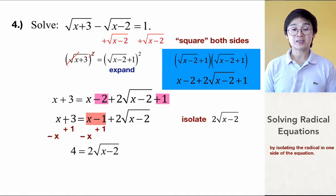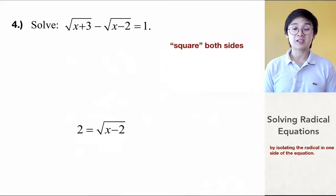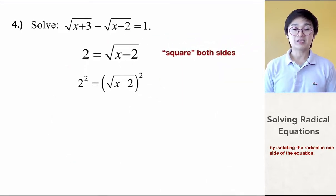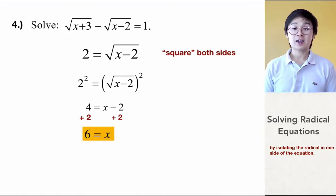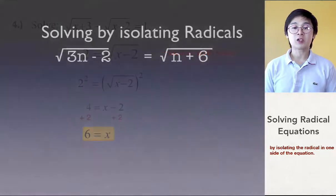By solving for x, the steps are now simpler. We have 4 equal to 2 times square root of x minus 2. By dividing both sides by 2, we get 2 equal to square root of x minus 2. Since our equation still has the square root symbol, we square both sides to get rid of the radical, ending up with 4 equal to x minus 2, so x is equal to 6. So this is how we solve this more complex radical equation with two radicals.